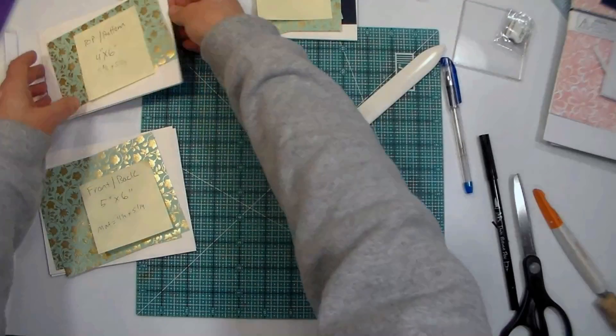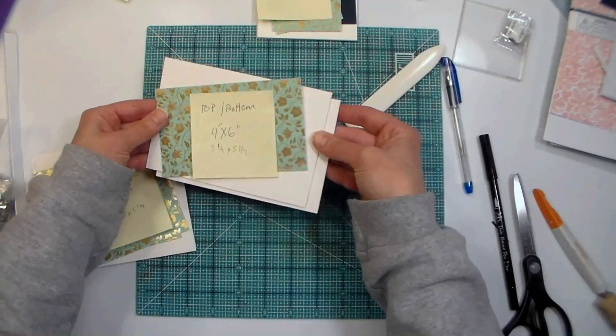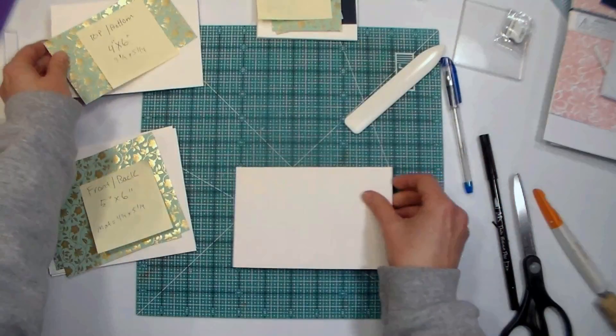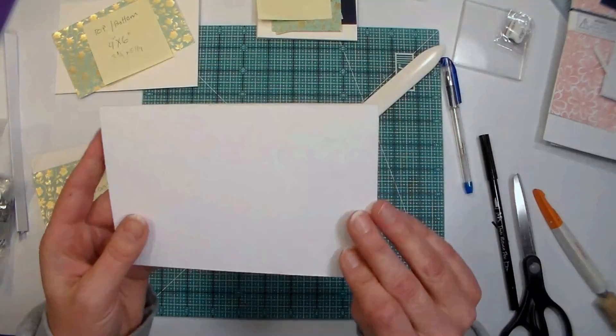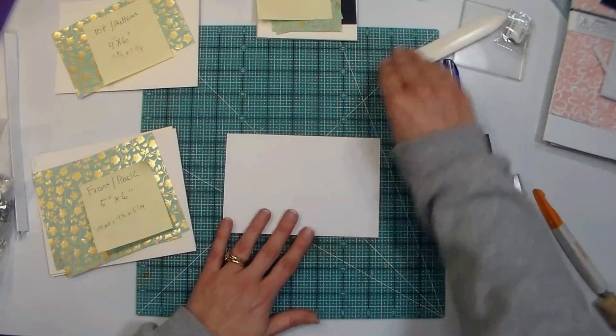I went ahead and cut matting layers out of a beautiful paper that came in one of the Annie's Card Maker Kit of the Month clubs. I trimmed them to three-quarter inches smaller than each of the panels, and I'll put those measurements in the video description as well.